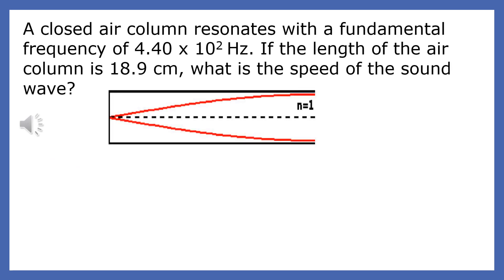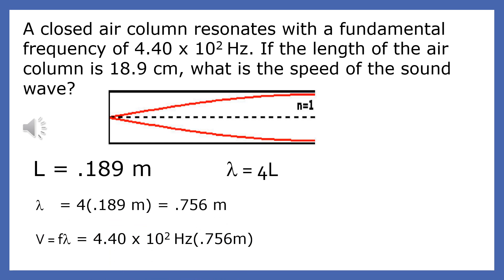A closed air column resonates with a fundamental frequency of 4.40 × 10² Hz. If the length of the air column is 18.9 centimeters, what is the speed of the sound wave? The length of the air column L converts to 0.189 meters. Since we're at the fundamental, the wavelength is four times L — because we have a quarter of a wavelength. So the wavelength is four times the length of the tube, giving 0.756 meters. Plugging that into the velocity formula, we get 330 meters per second.